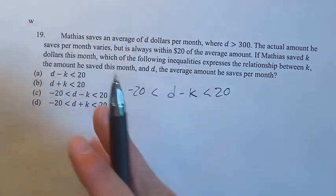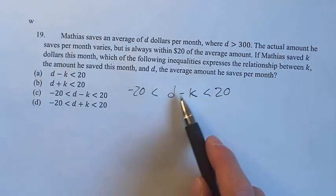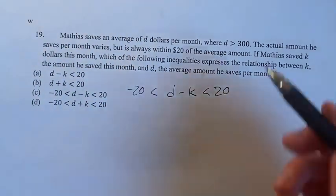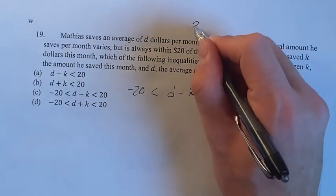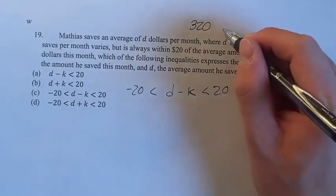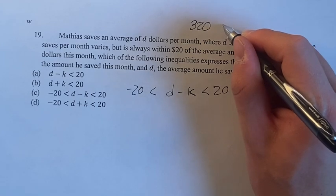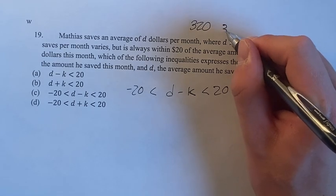We have to take into account if K is larger than D. Let's say he saved exactly $320 average, and then in one particular month saved 330.